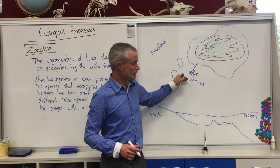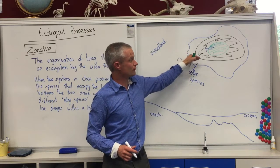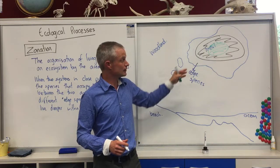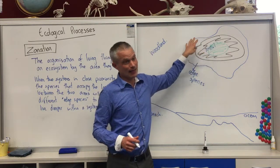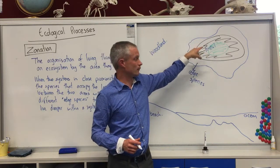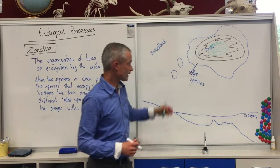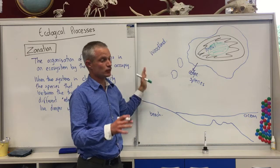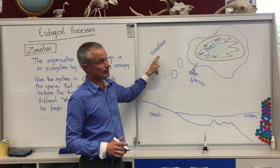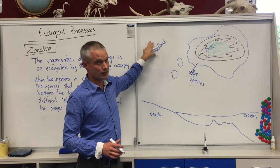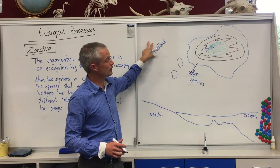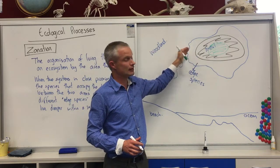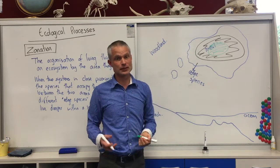So the edge species are on the edge of the forest. And the further you go within the forest, the more specialised those living things become to the particular abiotic factors within that ecosystem. The same within the woodland — a woodland tends to be a bit more diverse, but you would have species that are specialised to living within that woodland. And the closer to a different ecosystem like a forest, the more variable those species become.